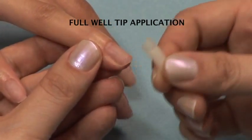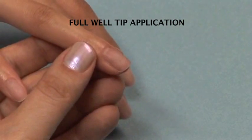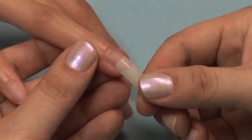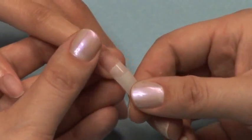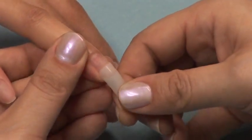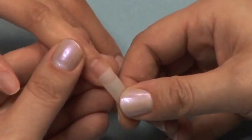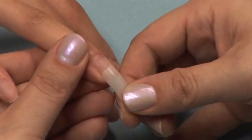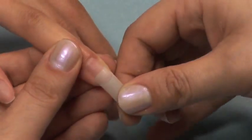Be sure that the tip size you choose covers the nail from the left sidewall to the right sidewall. You never want to use a smaller tip to give the appearance of narrower nails. This can be achieved by creating a nice natural C curve rather than a flatter nail.